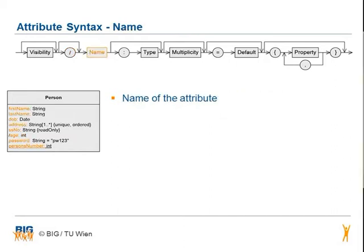Of course, the most minimalistic attribute consists only of a name — usually the name is written in lower case. You can see the attribute person's number is underlined. It means that the attribute is exactly the same for each object.